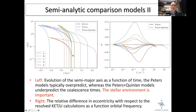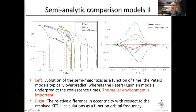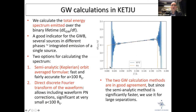The eccentricity comparison shows the same trends: Peters underpredicts and Peters-Quinlan overpredicts eccentricity, with differences on the order of 0.1 — not dramatic but still significant.